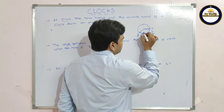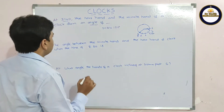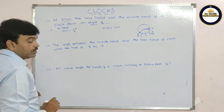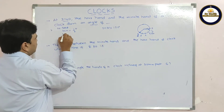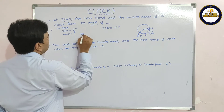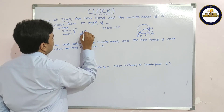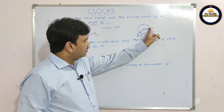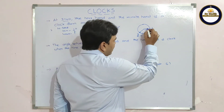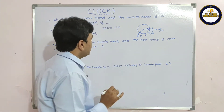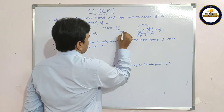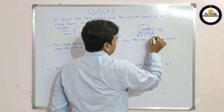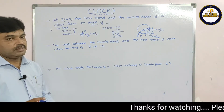For 3:40, that is 3 hours and 40 minutes. Using the formula: the hour hand in one minute makes half a degree. For 40 minutes: 40 × (1/2) = 20 degrees. Since I initially assumed the hour hand was at 3 but it has actually moved 20 degrees beyond, I subtract: 150 − 20 = 130 degrees. The angle between the minute and hour hand is 130 degrees.